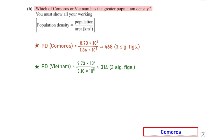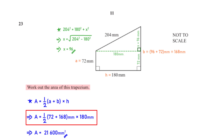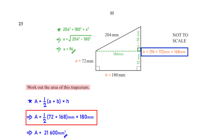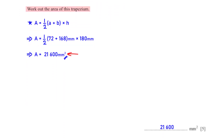Work out the area of this trapezium. Using the trapezium area formula, a is 72 mm and h is 180 mm. To find b, we first find x using the Pythagorean theorem: 204² = 180² + x², giving x = 96. So b = 96 + 72 = 168 mm. When we substitute into the formula, we get 21,600 mm².